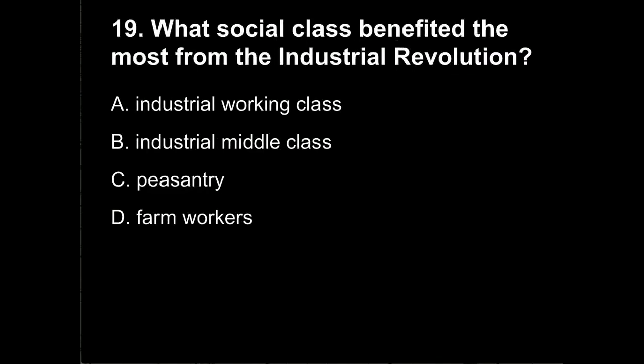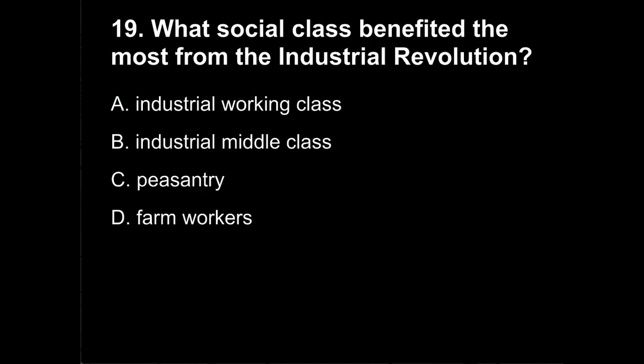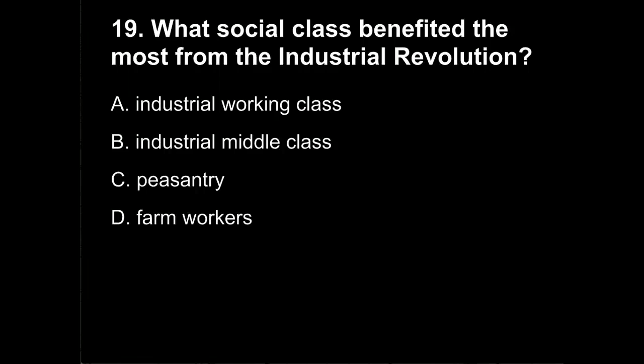Question 19. What social class benefited the most from the Industrial Revolution? Was it A, industrial working class? B, industrial middle class? C, peasantry? Or D, farm workers?